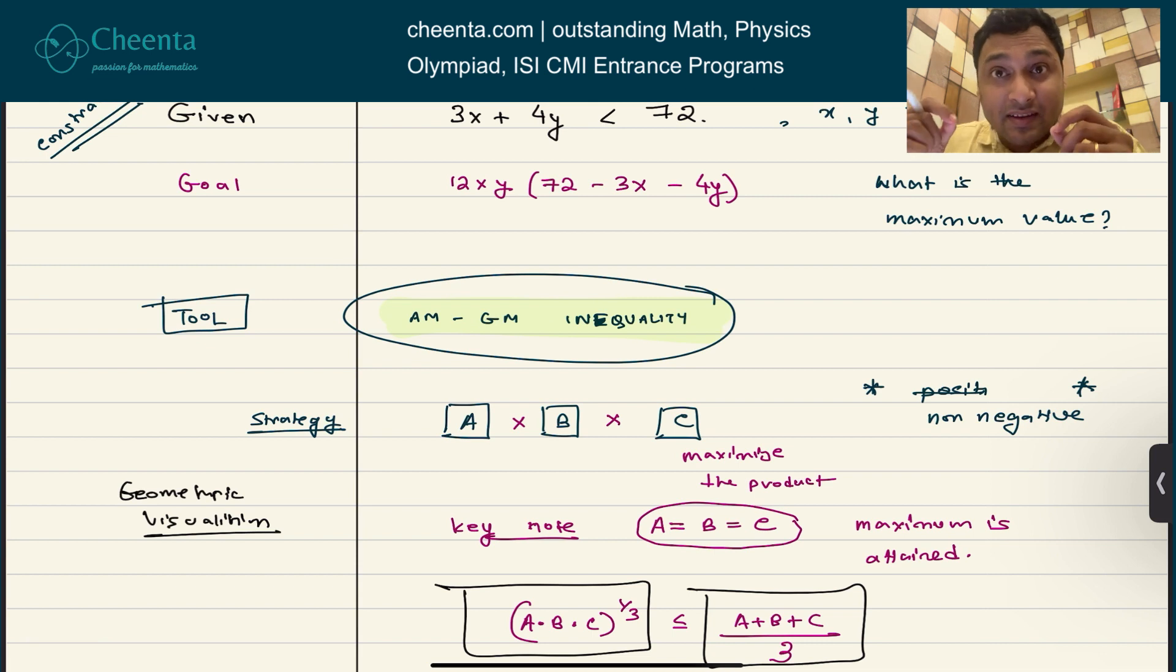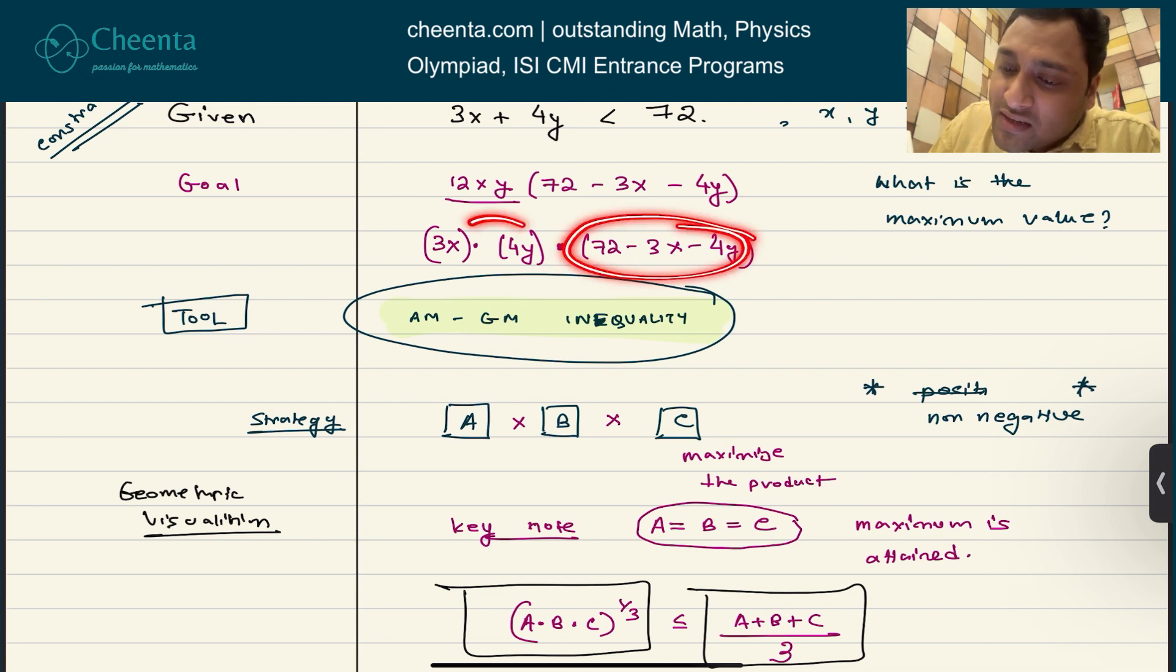Therefore, the maximum is attained when everything is equal, like all three of them are equal. So which three of them? Well, you can write this like this: 3 times X times 4 times Y times 72 minus 3X minus 4Y. So if all of these three quantities are equal, that's when the product attains the maximum value.